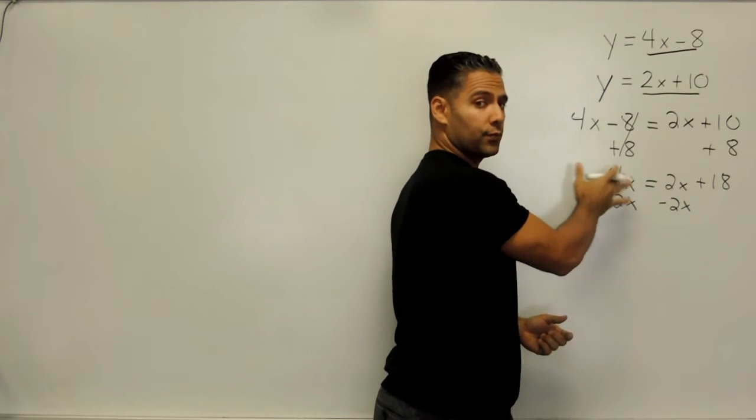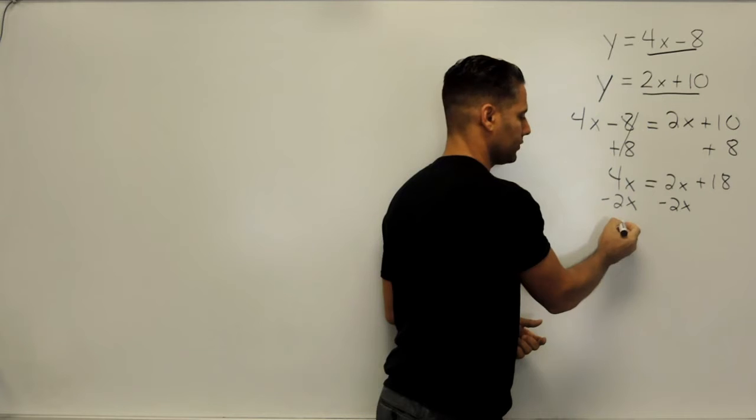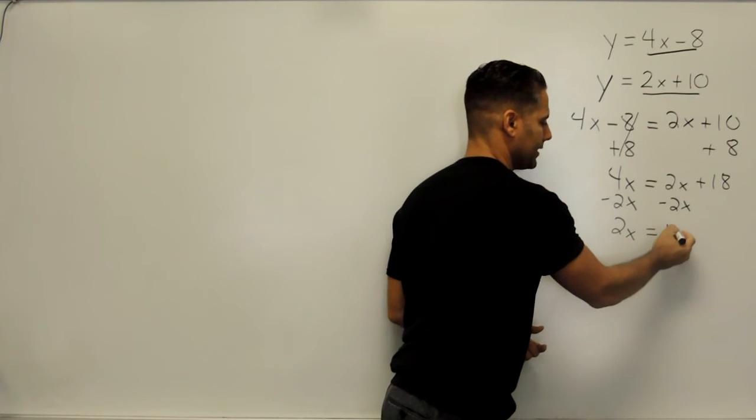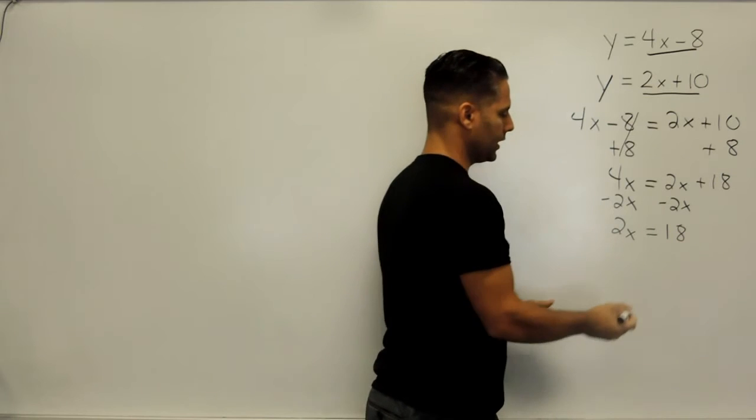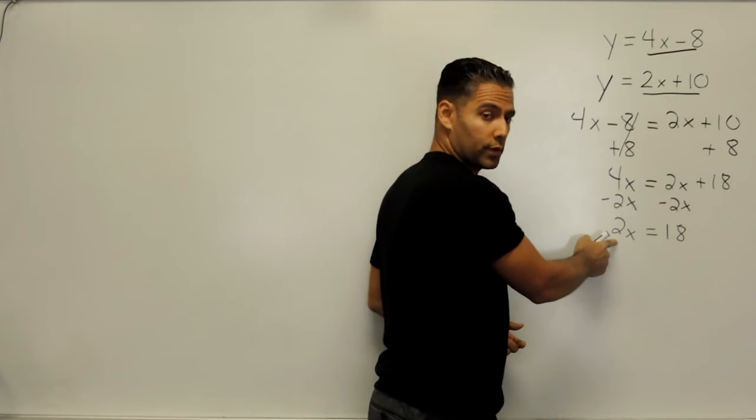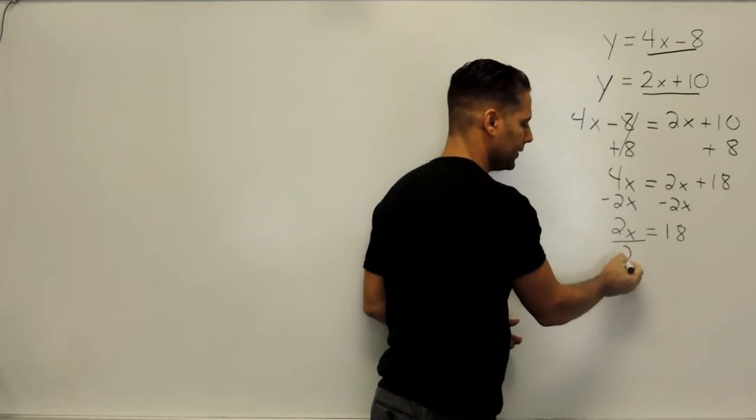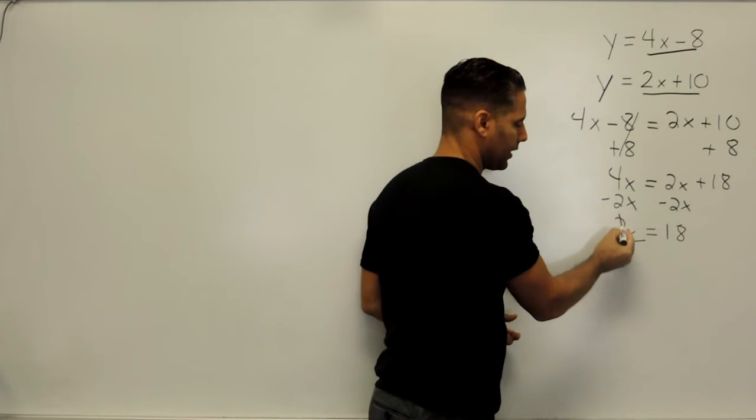So if we combine 4x and negative 2x, that leaves us with 2x. And we still have an 18 on the right-hand side here. Now what we have to do is get rid of this coefficient of a 2, and to do that we just divide it by itself. Because anything divided by itself is one whole.